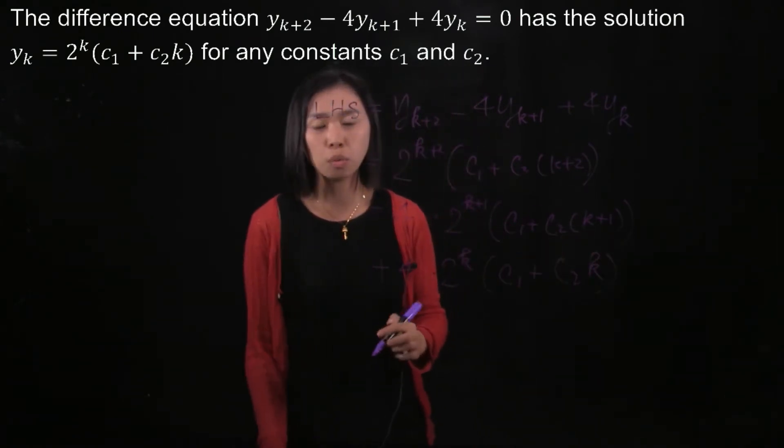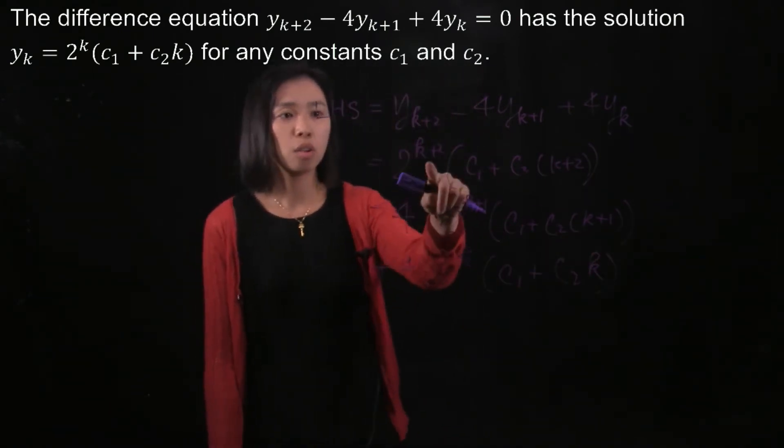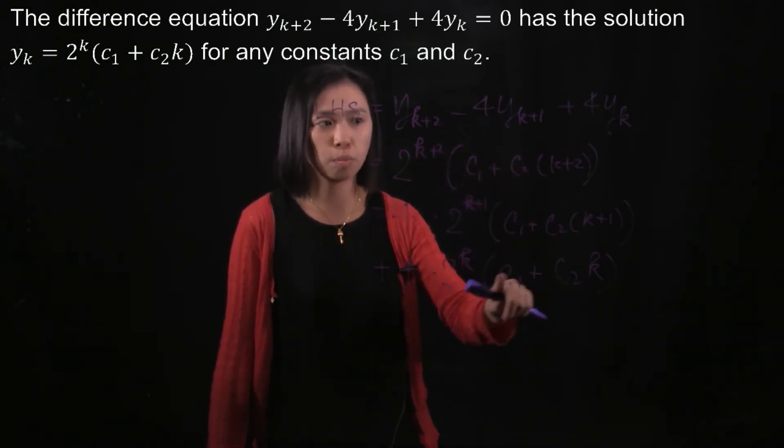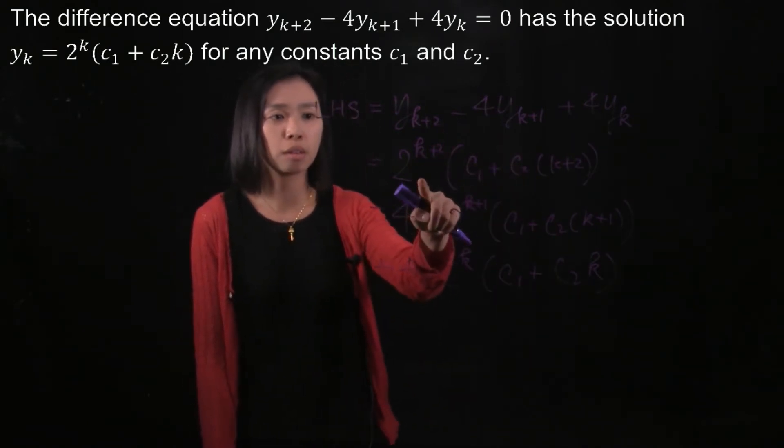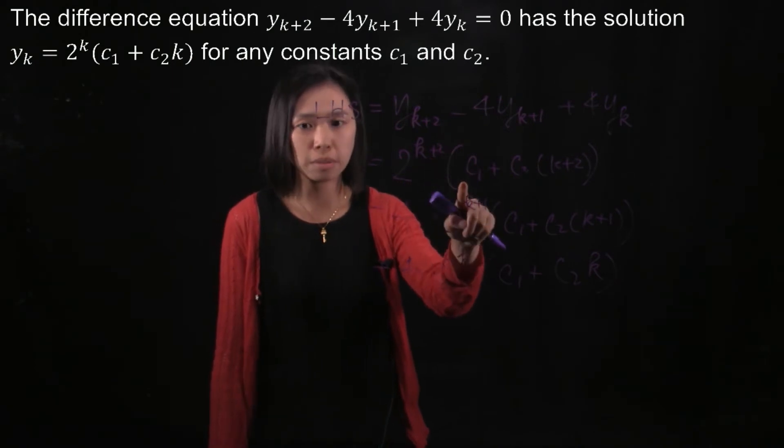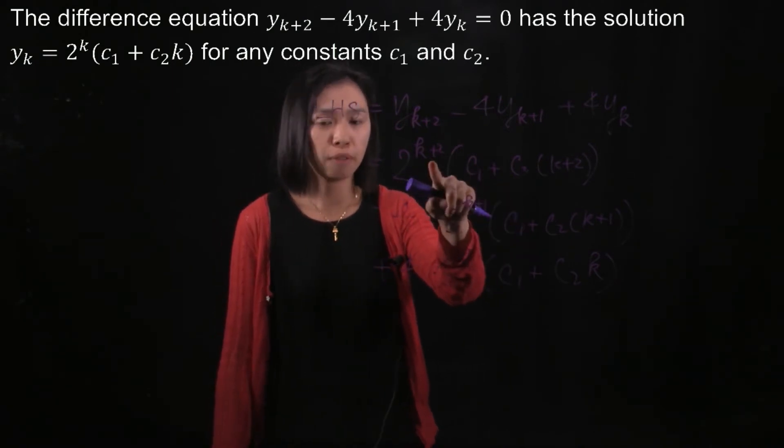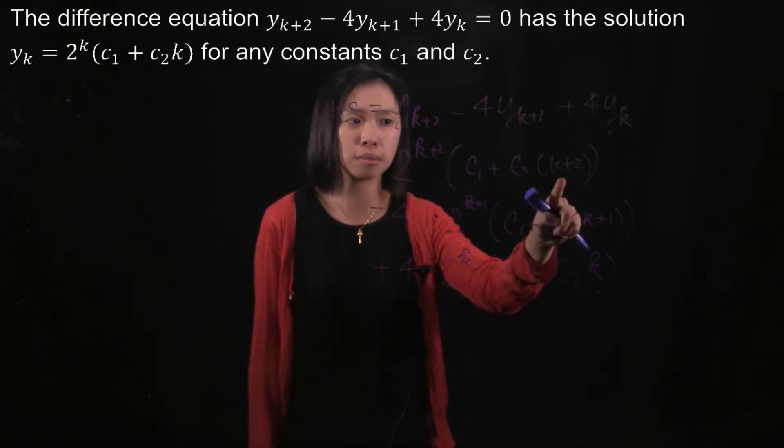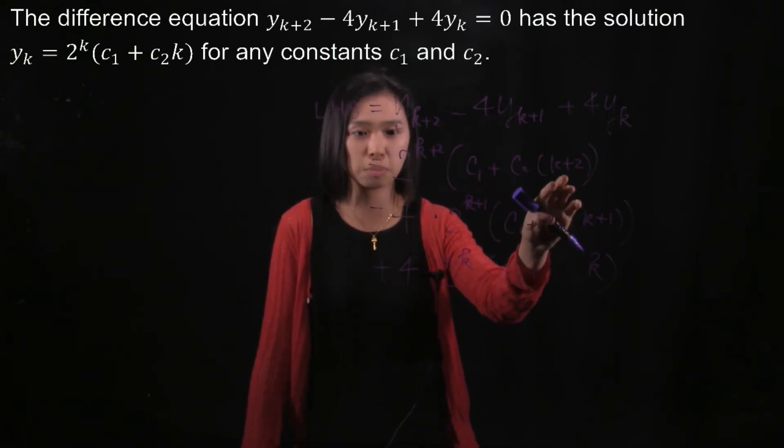And then you will need some algebra. You expand all the terms here. So we do it verbally: 2^{k+2} times c_1 plus 2^{k+2} times c_2 times (k+2). You may also need to expand this one as well.